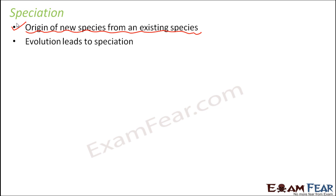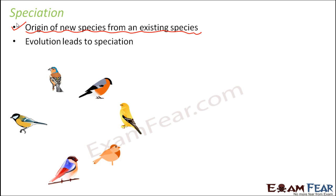So evolution leads to speciation. Small small changes happen and then over a long period of time new organisms develop. The best example to discuss here would be Darwin's finches. We started with just one species of finches which migrated to the island, and from that one species you currently have around 13 to 15 species of finches. So it all happened due to evolution.